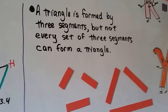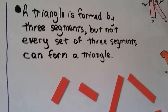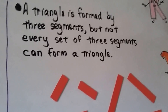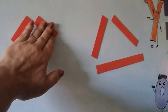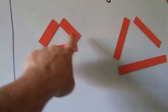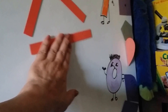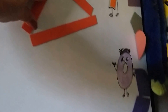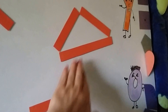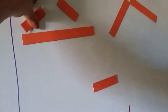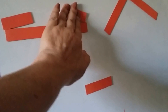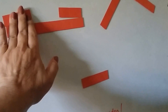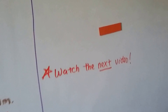A triangle is formed by three segments, but not every set of three segments can form a triangle. With six segments here, we can slide some to make a triangle. But if we try moving a very long side, the other two sides won't reach each other to close the triangle — even if they're laid flat, they're never going to reach. We're going to talk about that in the next video.